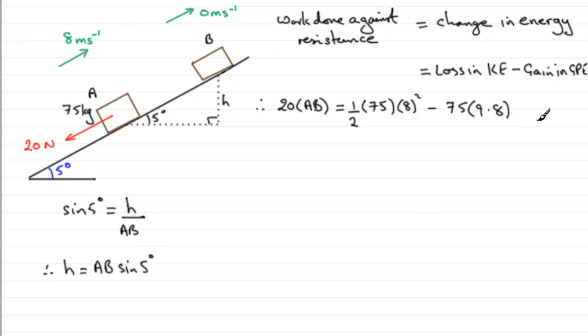So we can pop that in here. We've got mg and then we need h, which is now AB multiplied by the sine of 5 degrees. So, let's just tidy this up. On the left here we have 20 AB.